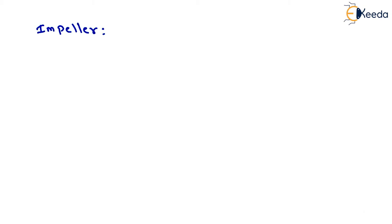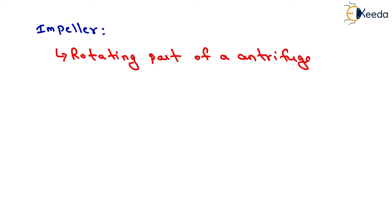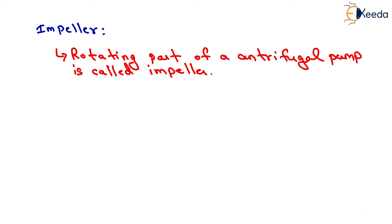The rotating part of a centrifugal pump is called the impeller. It consists of a series of backward curved vanes. The impeller is mounted on a shaft which is connected to the shaft of an electric motor. Now the second part is casing.